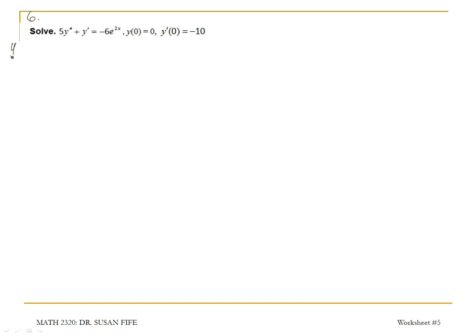Our first solution, or our first part, is going to be to find the complementary solution by letting y equal e to the mx, and then looking at our characteristic equation, 5m squared plus m equals 0. For the characteristic equation, we don't take into account this function of x. We can solve by factoring out an m, and setting equal to 0 gives us m equals 0, or 5m plus 1 equals 0. That gives me 5m equals negative 1, or m equals negative 1 fifth.